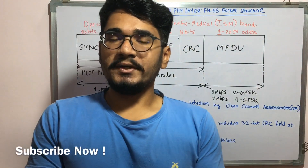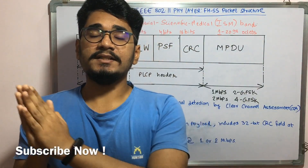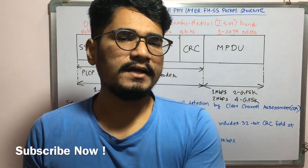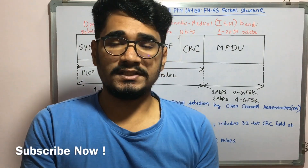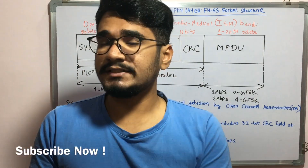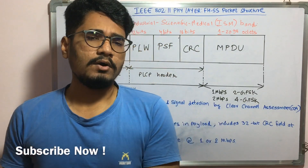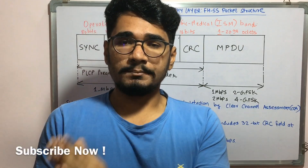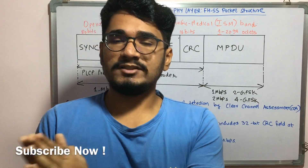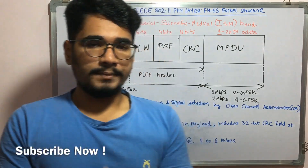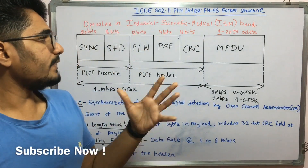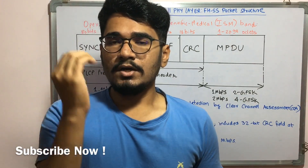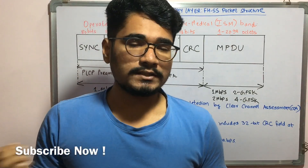Hey guys, welcome back to my channel. So today in this video, we'll see the IEEE 802.11 physical layer and in that we see the FHSS, that is frequency hopping spread spectrum. We already saw a video on DSSS, that is direct sequence spread spectrum, in our previous video. So in this let's see what is the FHSS packet structure and what are its various components.